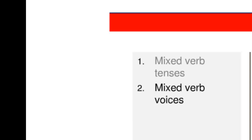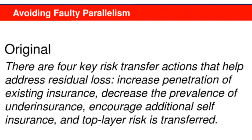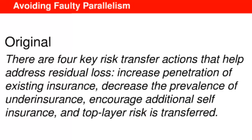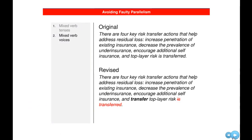The second cause of faulty parallelism is using mixed verb voices. In this version of the passage, the first three items in the series use verbs in active voice, while the fourth item uses passive voice — is transferred. In the revised passage, parallel structure is created by making the structure of the fourth item active instead of passive. The change has little or no effect on the reader's ability to understand the message; rather, the change makes the message more efficient. I cannot imagine a reader who would prefer to spend more rather than less time processing the information in the report.